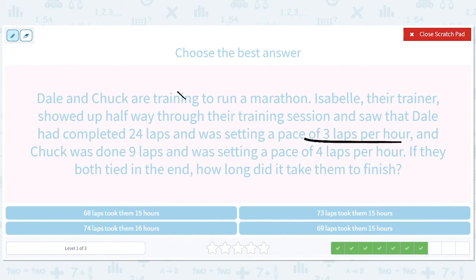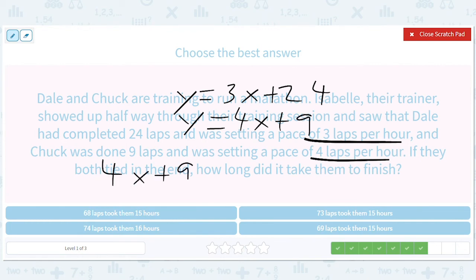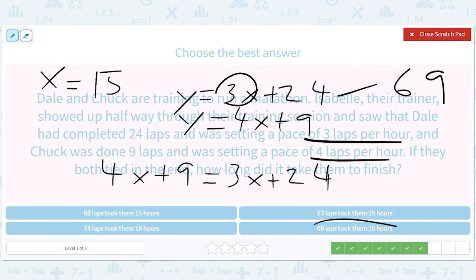3 laps per hour. Y equals 3X plus 24. Slopes are rates. So if you have a per hour, you know that's the slope. It's 4 laps per hour. Y equals 4X plus 9. 4X plus 9 equals 3X plus 24. That's going to give us X equals 15. We plug that in here. We get 45 plus 24 is 69. So 15 and 69 right there.